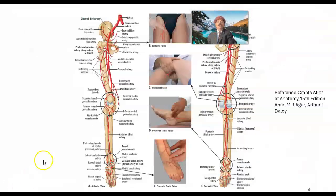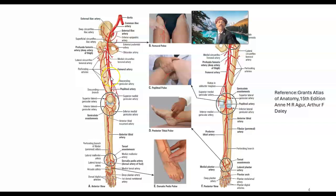Looking at another figure, we can trace the arterial tree: the aorta gives off the common iliac artery, which divides into the external and internal iliac arteries. The external iliac artery continues as the femoral artery, which has multiple branches including the profunda femoris artery. The femoral artery travels through the femoral triangle, then through the adductor canal, through the adductor hiatus, and continues as the popliteal artery.